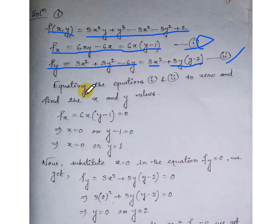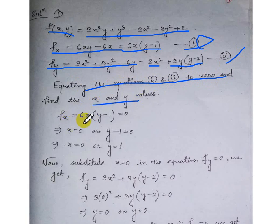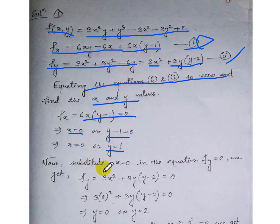We equate both equations to 0 and find the values of x and y. Setting fx = 6x(y - 1) = 0, we get x = 0 or y - 1 = 0, which gives y = 1. Now we substitute x = 0 into the second equation fy = 0.